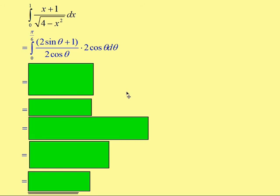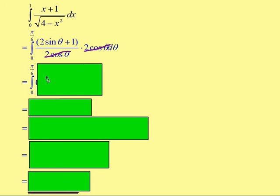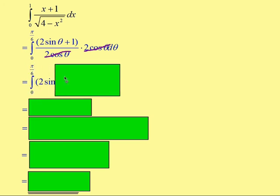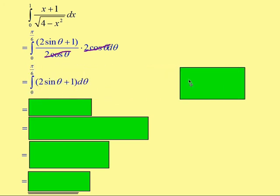Noticing that we are dividing by 2 cos theta and multiplying by 2 cos theta, these cancel out, leaving us with the integral between 0 and π/6 of just (2 sine theta plus 1) dθ.